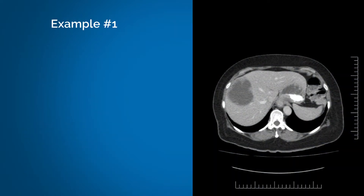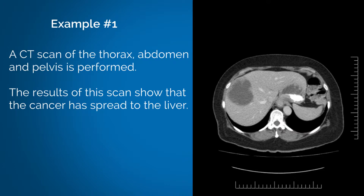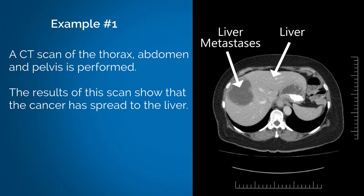We now need to determine if there is any distant spread of the cancer. To check for distant spread, a CT scan of the thorax, abdomen, and pelvis is performed. The results show that the cancer has spread to the liver, which is classified clinically as cM1A.